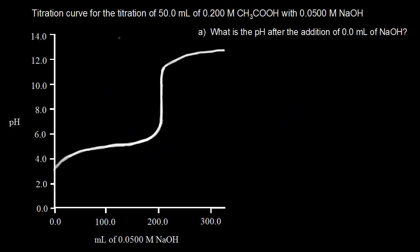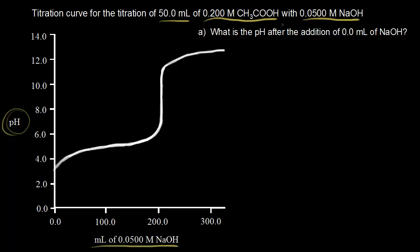Here we have a titration curve for the titration of 50 milliliters of 0.200 molar acetic acid, and we're adding 0.0500 molar sodium hydroxide to our acidic solution. We're plotting pH on the y-axis and milliliters of base added on the x-axis. In part A, what is the pH before you've added any base — that is, at 0.0 mLs of sodium hydroxide?